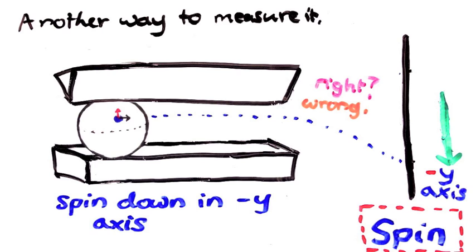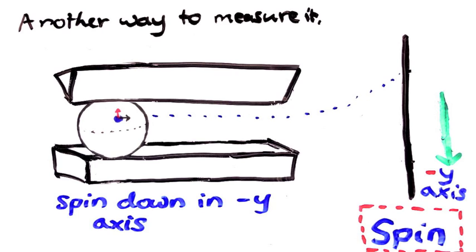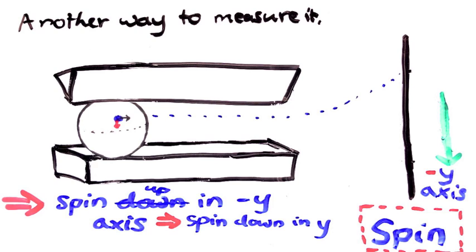Nope, that's not what Bohmian mechanics says. It still goes up, which forces us to conclude that it has spin down in the y-direction. And now we see how our second sensibility condition is broken.